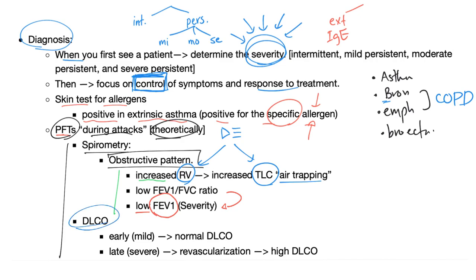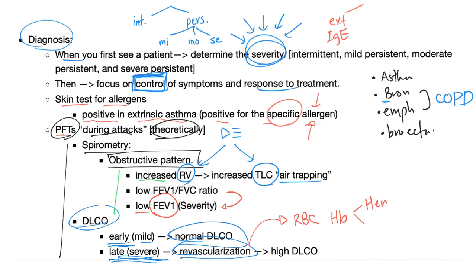DLCO — diffusion capacity of carbon monoxide. In early, very mild asthma, DLCO is normal. In late or severe cases, there is revascularization — more blood vessels, more red blood cells, more hemoglobin. Hemoglobin has heme and globin; heme contains iron and protoporphyrin. If you have more hemoglobin, there is more hemoglobin to bind carbon monoxide, so you have increased diffusion capacity of carbon monoxide.